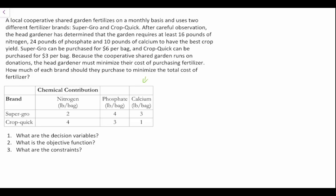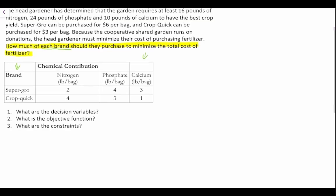We're asked in question one: what are our decision variables? Looking at the question, we're asked how much of each brand should they purchase to minimize the total cost of fertilizer. We have two brands, so we'll say let X1 equal the number of bags of Super Grow, and let X2 equal the number of bags of Crop Quick. You can use whatever variables you want, such as X and Y or anything else.